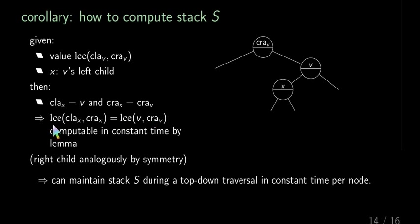So the LCE between cray X and clay X is actually, if we use the substitution as the LCE between V and cray V, and because we have this value, we can use the lemma of the last slide to compute this value. And for the right child, it's symmetric by changing cray and clay. So in detail, in the end, we can maintain the stack during a top-down traversal in constant time per node.